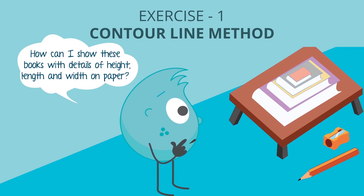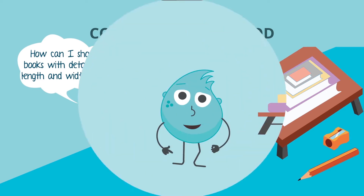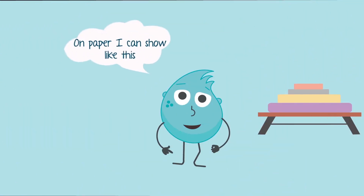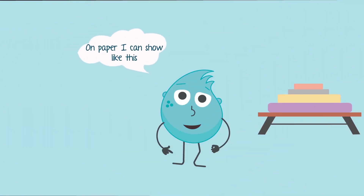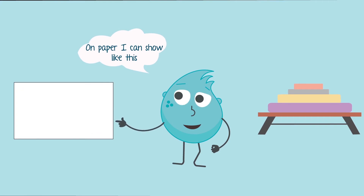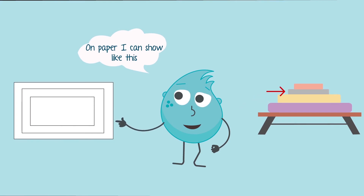Here, Tixie seems to be puzzled and looks confused. Tixie's teacher has asked her to show a stack of books placed on a table on a paper. Tixie gets an idea that we can show the height, length, and width of books on paper by making rectangles. As shown, we have one, two, three, and four books.